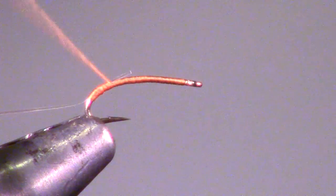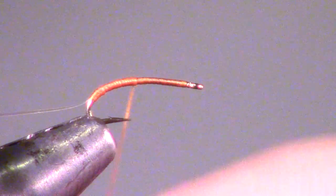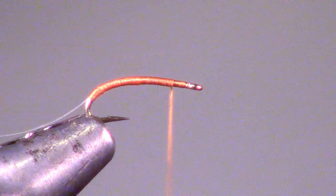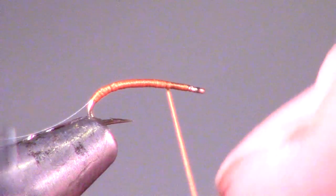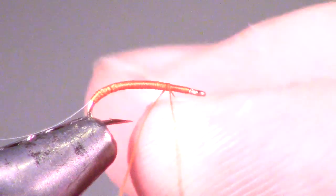Now wrap your thread all the way back to about an eye length from the eye of the hook. It will help your next step to do a half hitch here and move your bobbin to a bobbin holder.